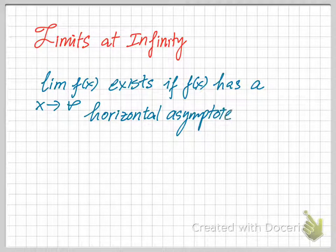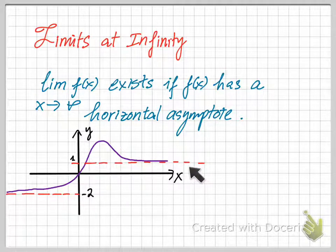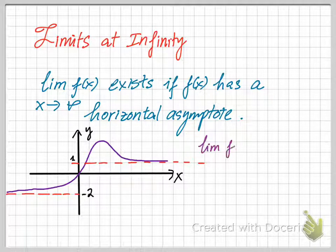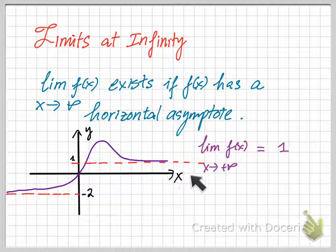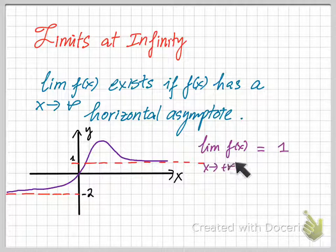Let's look at the following functions. This function f has two horizontal asymptotes: one is y equals one and one is y equals negative one. If you want to find the limit of function f when x goes to positive infinity, it should be one, because as x goes to positive infinity, the function values approach one but would never touch the value y equals one.